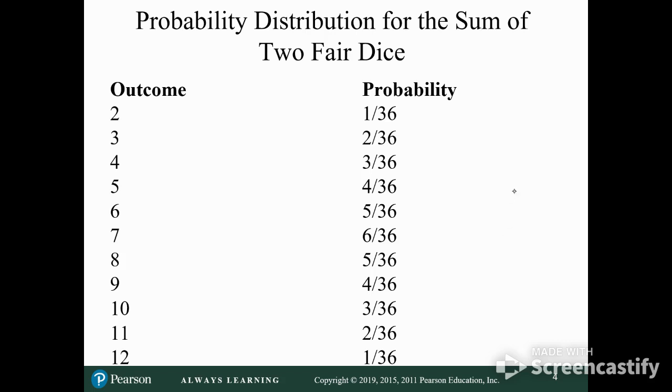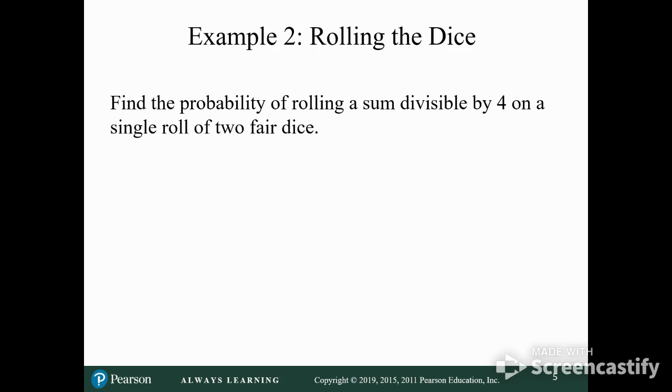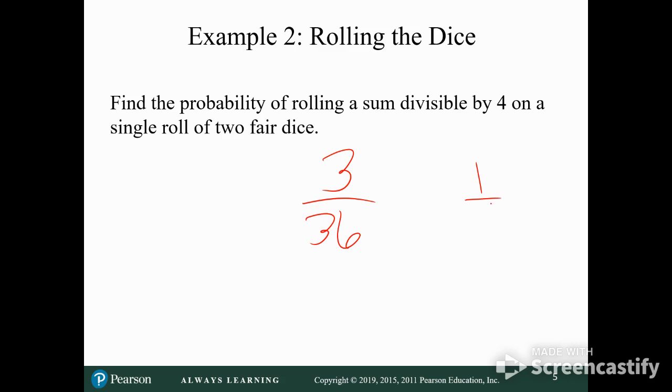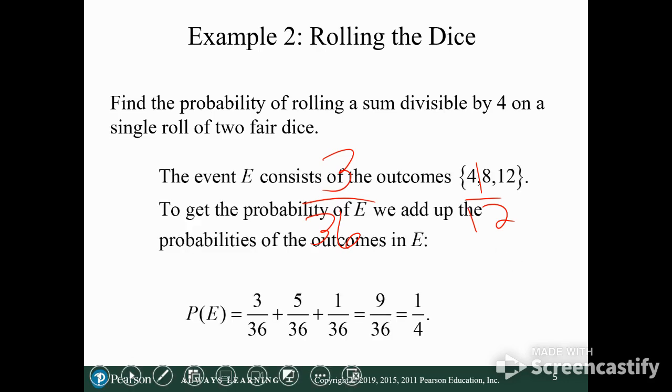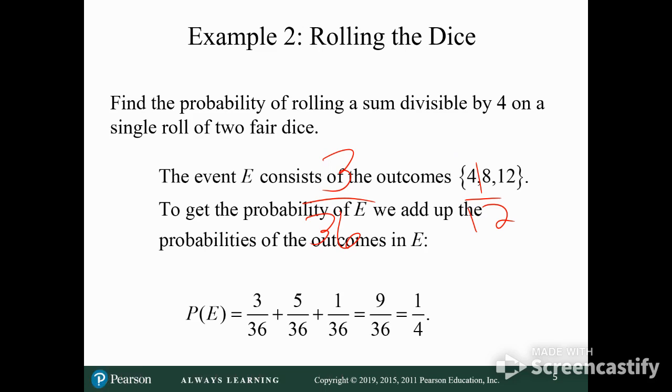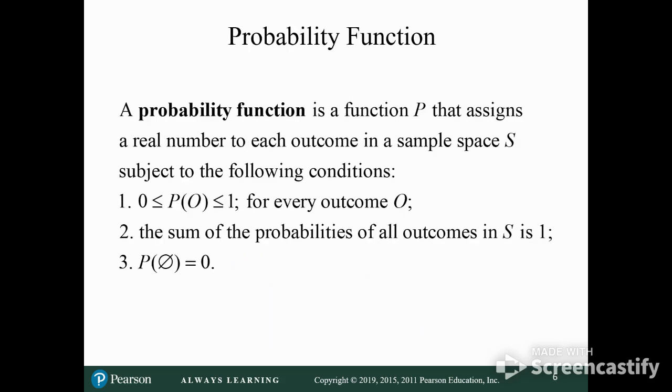So probability for rolling the sum of the dice. Find the probability of rolling a sum divisible by 4 on a single roll of two fair dice. So if we go back to this one, oh, a sum divisible by 4. I didn't read it. I was doing a 4. So you got a 3 out of 36 chance of rolling a 4, a 5 out of 36 chance of rolling an 8, and a 1 out of 36 chance of rolling a 12. Add them up, 9 out of 36 chance. A quarter of the time, you're going to roll a sum divisible by 4. Make sure you read the problem instead of thinking you know what the problem is.